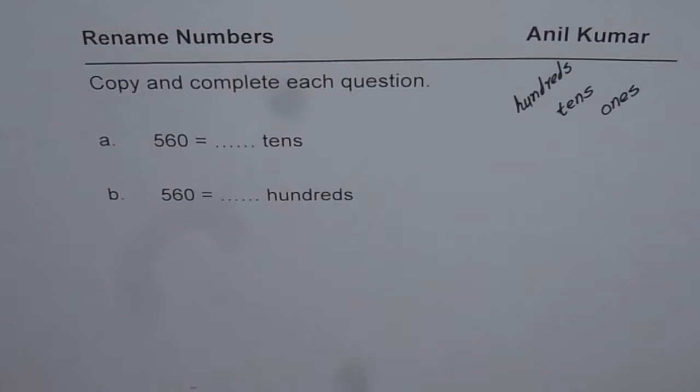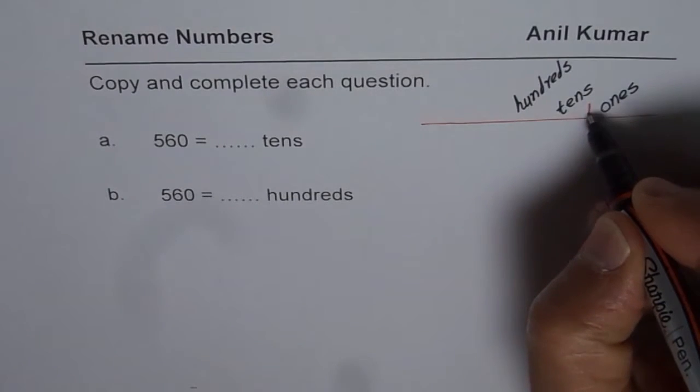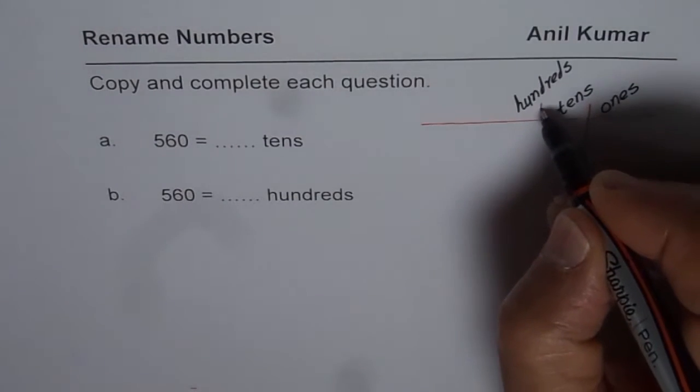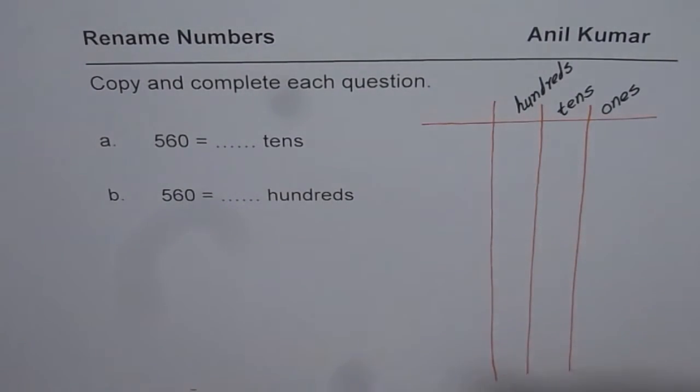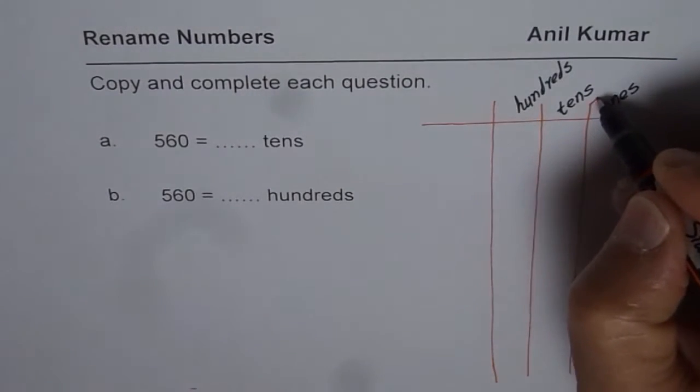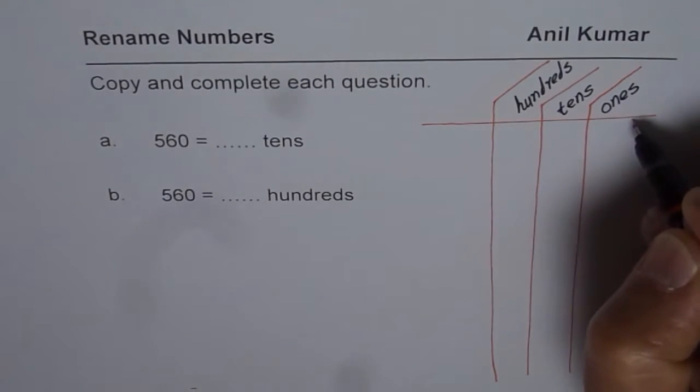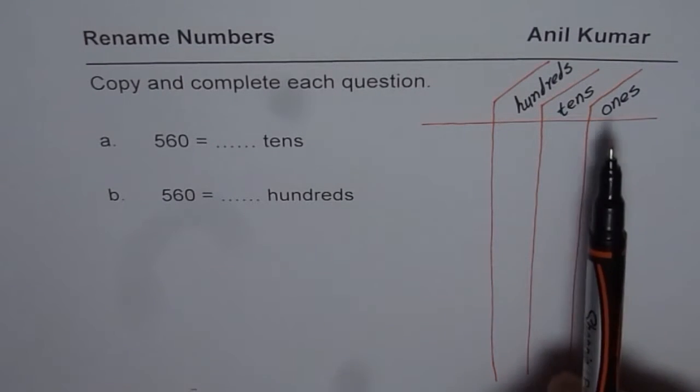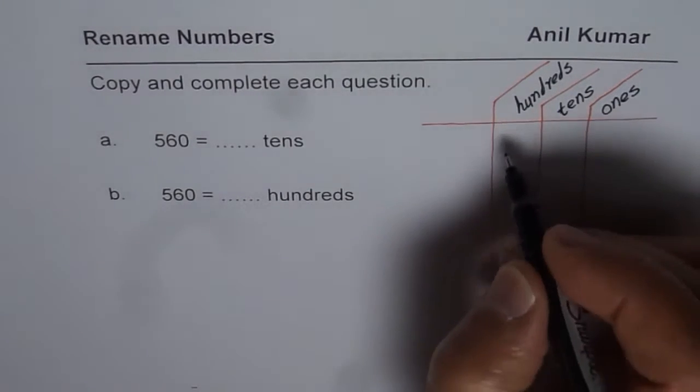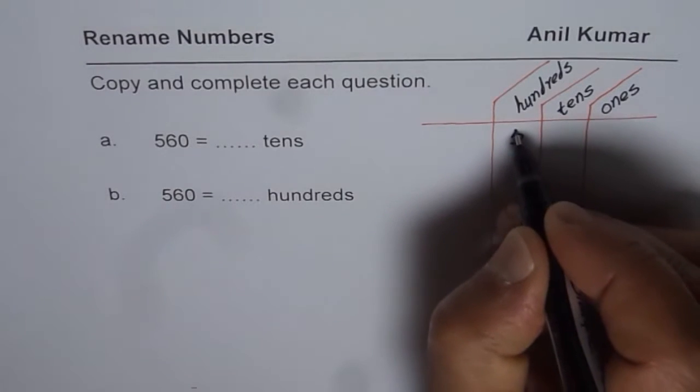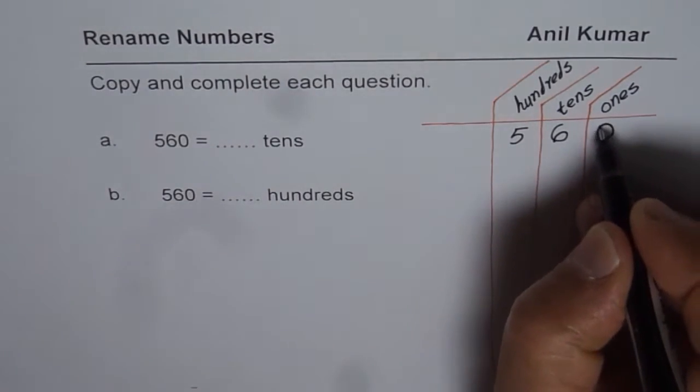So let me make this place value chart. You can place the numbers in a place value chart to help understand the concept and get the right answer. So the numbers here are 560. So we're talking about some numbers in hundreds and therefore I've taken the first period which has ones, tens and hundreds. As you know, 560 can be written as 5 in hundreds place, 6 in tens place, 0 in ones place.